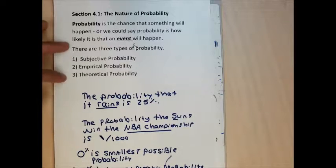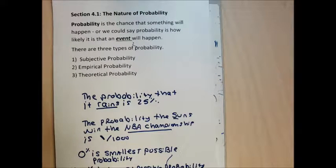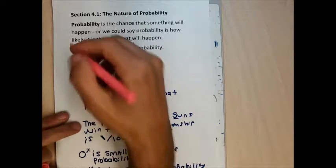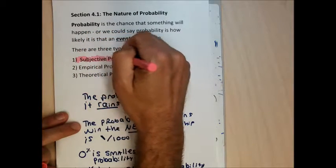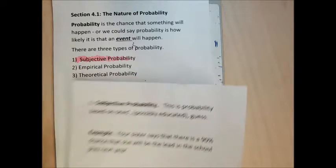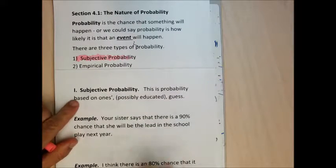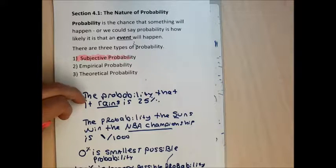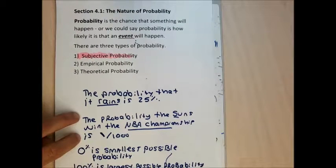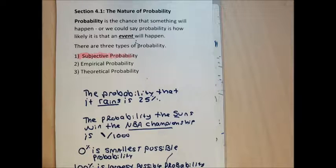Generally, there are three different kinds of probabilities. The ones I've been working with right now on this sheet are subjective probabilities. A subjective probability is really just an educated guess — I made educated guesses by looking at the clouds outside and knowing something about what the Suns' team looks like this year. I may be wrong on both of them.